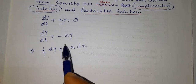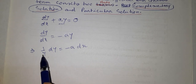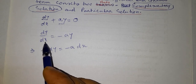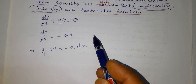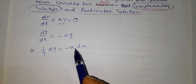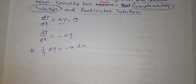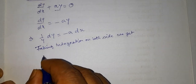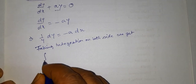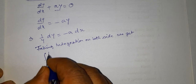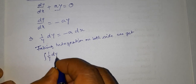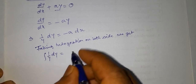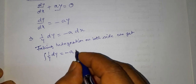Here, taking y to the left-hand side, we get 1/y, and taking dx to the right-hand side we get -a. Taking integration on both sides, we get the integral of (1/y) dy equal to -a, as a constant.